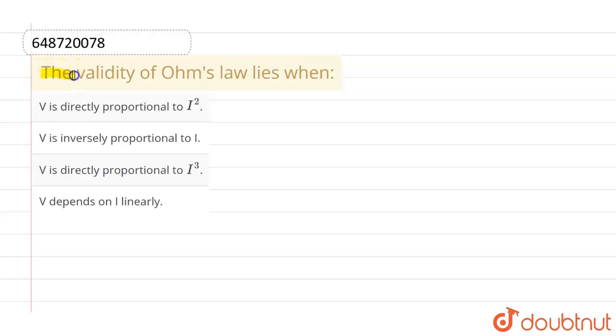this question, the given question is: the validity of Ohm's law lies when? And the given options are: V is directly proportional to I², V is inversely proportional to I, V is directly proportional to I³, and the last given option is V depends on I linearly.